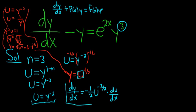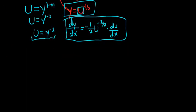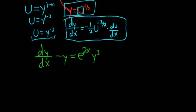I'm going to put that in a box — it's an accomplishment. The next step is to make the substitution. The original DE is dy/dx minus y equals e^(2x)·y^3. Now we plug everything in: dy/dx is negative one-half · u to the negative three-halves · du/dx, and y is u to the negative one-half, so minus u to the negative one-half.